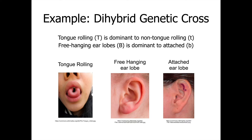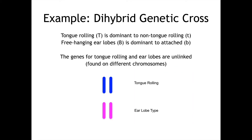The alleles allocated to tongue rolling are T — a capital letter is always the dominant one. Then B is going to be for the earlobes. The genes for tongue rolling and earlobes are unlinked, so the dihybrid cross we're going to do is for unlinked genes.